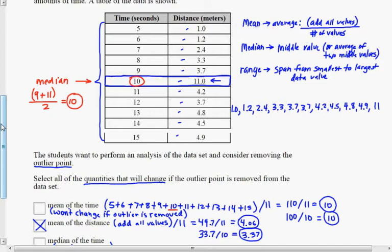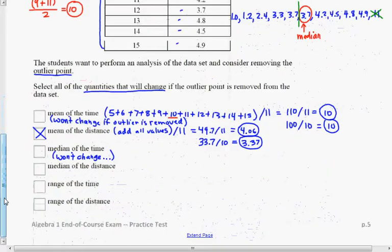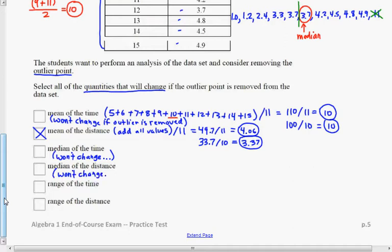So with the 11 involved, the middle value, 1, 2, 3, 4, 5, is the sixth value. So this is the median with that value in place. But if I was to remove the 11 from that data set, then the cut line would be between the two middle terms. It would be between 3.7 and 3.7. So sure enough, if I remove the outlier, it just so happens because of the repeating 3.7s in the middle of the table, or in the middle of the data, that the median would actually not be affected. The median of the distance won't change. It stays 3.7.